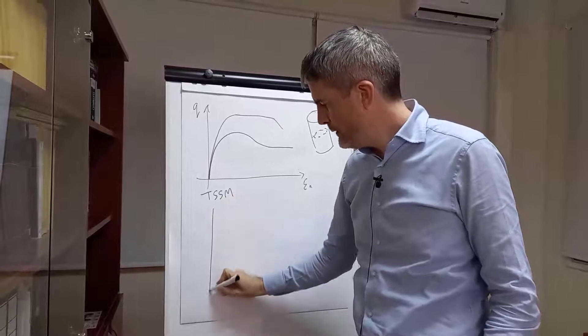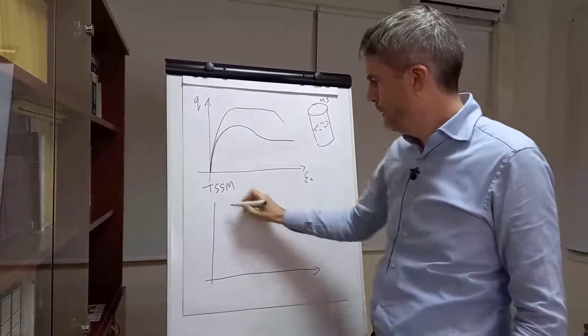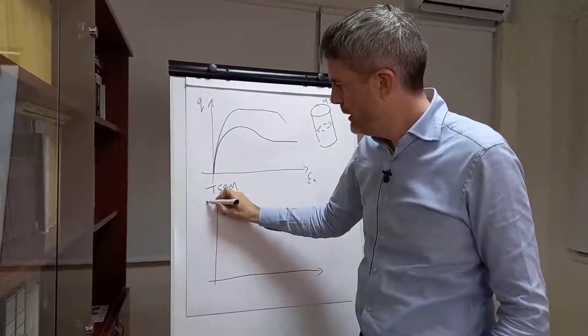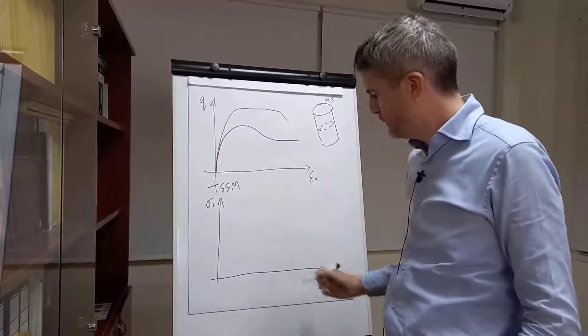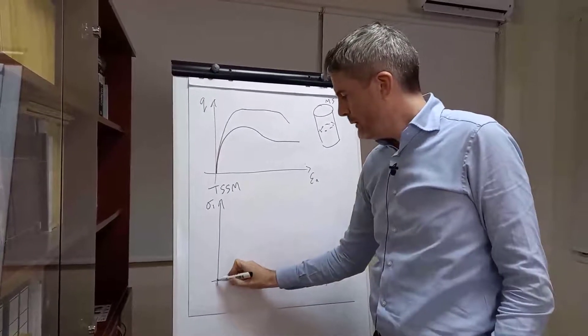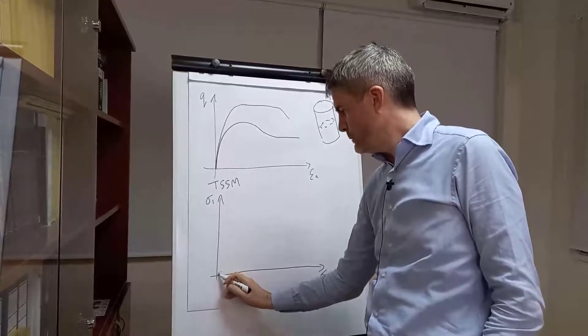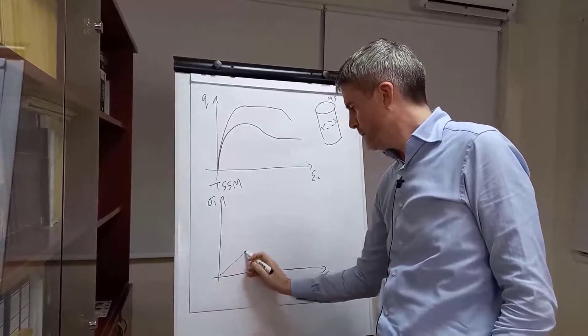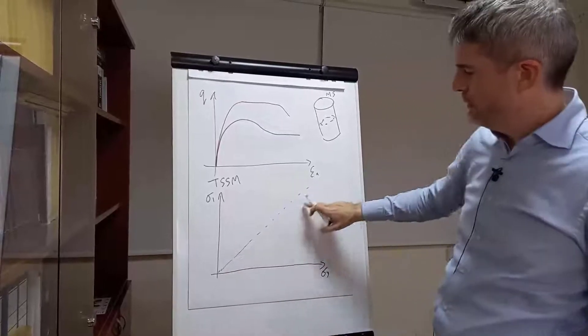So, we represent that in principle stress space. Major principle stress against minor principle stress. We get a frictional failure envelope, as you get in all soils. I'm trying to do a dash line here, not easy. There we go. That represents the friction angle.